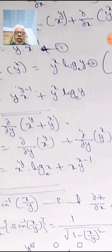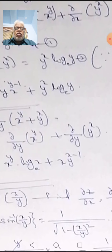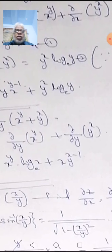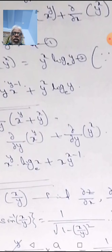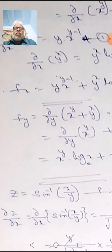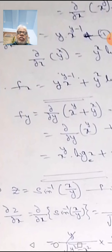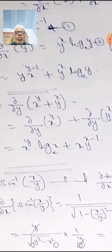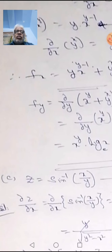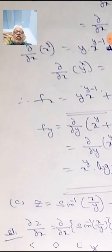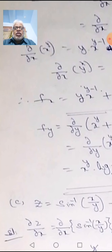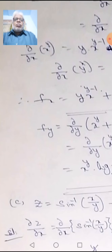For dou/dou y of y power x: using the formula dou/dou x of x^n = n·x^(n-1), we get x·y^(x-1). So f of y equals x^y · log(e)·x plus x·y^(x-1). Both f of x and f of y are different. When functions involve two variables like x^y and y^x, we can find derivatives using these two models.